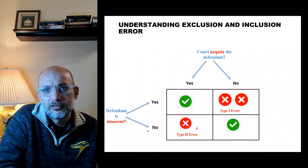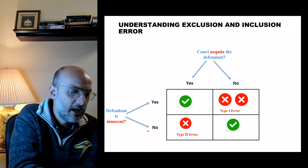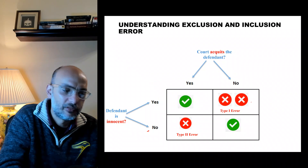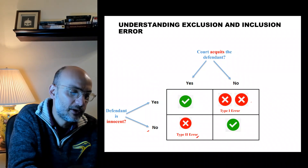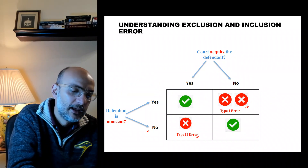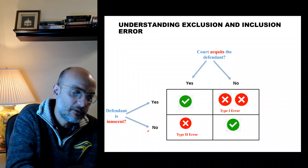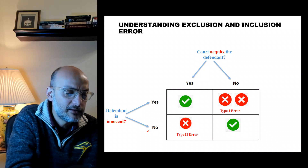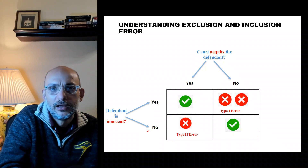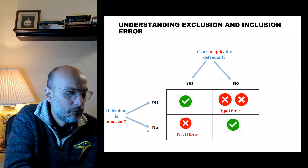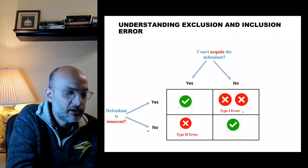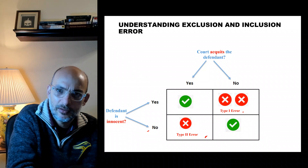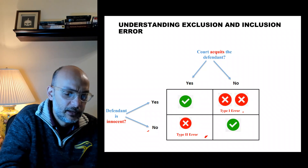These two errors conflict with one another. If the court charges anyone who comes before it, you can reduce the Type 2 error but then you expand the Type 1 error. The error that is worse — we try to control it, keep it minimal. Sometimes to keep it minimal you need to relax the other one a little bit.